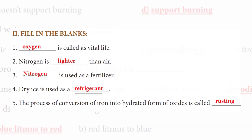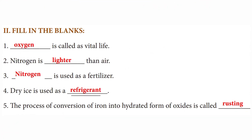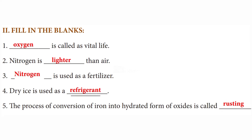Fill in the blanks. Oxygen is called as vital life gas. Nitrogen is lighter than air. Nitrogen is used as a fertilizer. Dry ice is used as a refrigerant. The process of conversion of iron into hydrated form of oxides is called rusting.